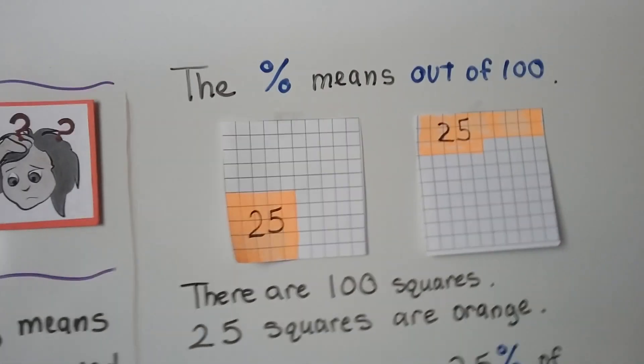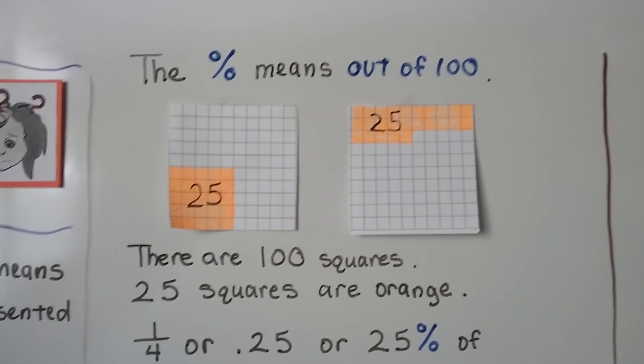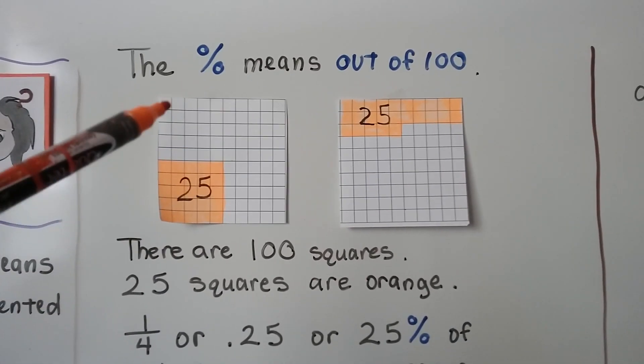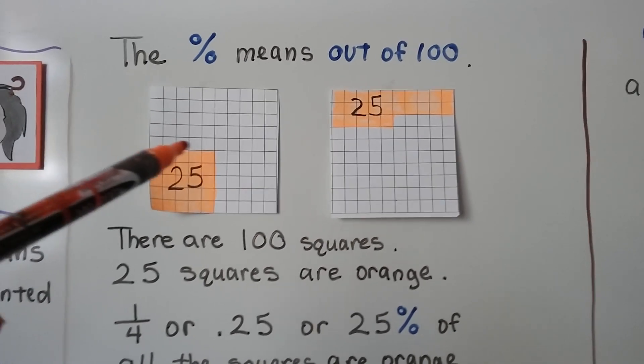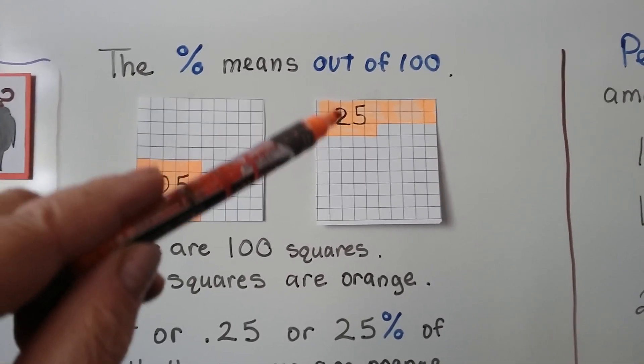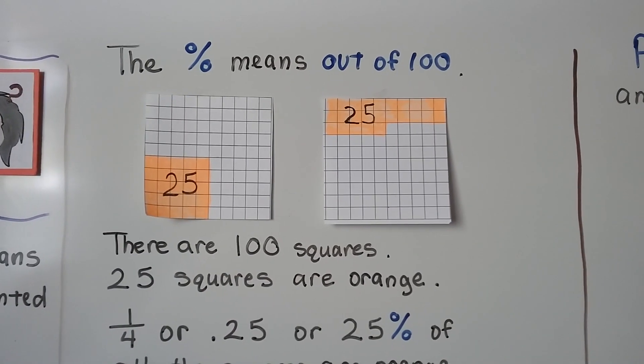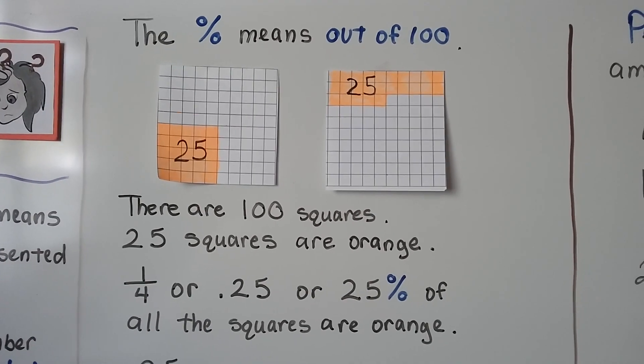The percentage sign means out of 100. So anytime you see this, you know it means out of 100. Here I've got 100 squares. There's 10 squares going across and 10 squares going down. I've got 25 of them colored in orange here. Either way, it's 25 out of 100. There are 100 squares.